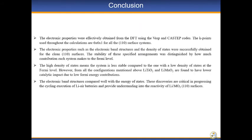The electronic properties were efficiently obtained from the density of states using the VASP code and k-point mesh. The k-points used throughout the calculations are 6x6x1 for all the 110 surface systems. The electronic properties, including band structures and density of states, were successfully obtained for these configurations. The stability was distinguished by how much concentration each system makes to the Fermi level. The electronic band structures compared well with the density of states. These discoveries are critical in progressing the cycling execution of lithium-air batteries and provide understanding into the reactivity of Li-MO2 surfaces.